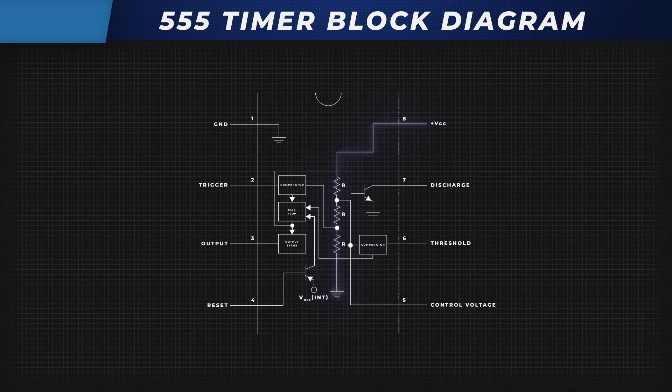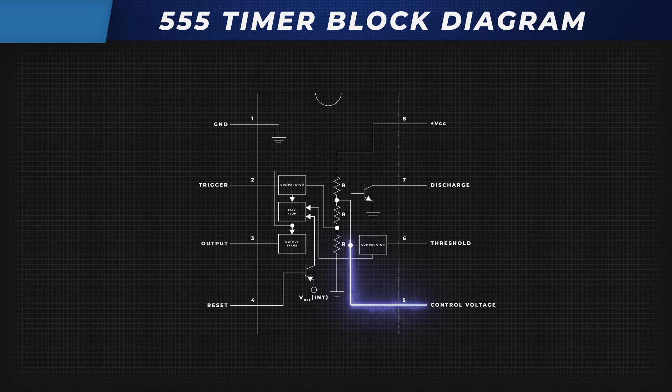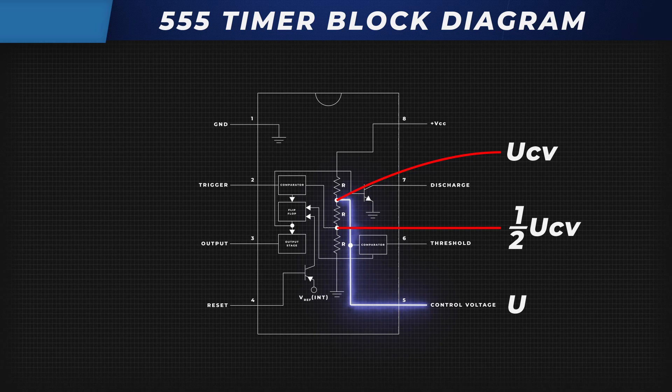Despite this, there is a control voltage CV pin connected to one of the resistors. When the CV pin is not connected, resistors divide the reference voltage into two-thirds and one-third of VCC. On the other hand, when CV pin is connected, the voltage will be UCV instead of two-thirds VCC and half UCV instead of one-third VCC.